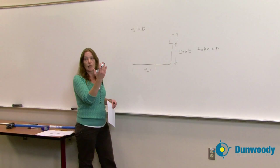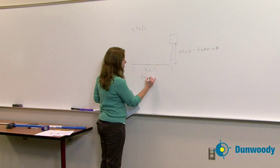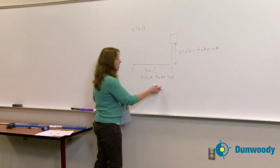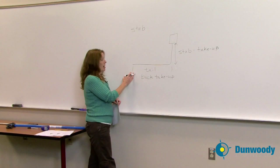We have a back take up. And the back take up refers to the amount of conduit that we lose in the process of bending.